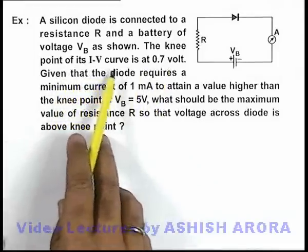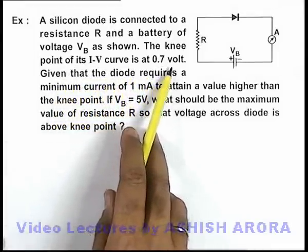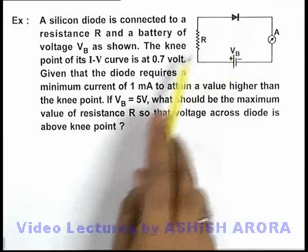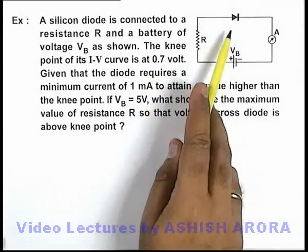Here the knee point of its I-V curve is at 0.7 volt. That means if the voltage across the diode is more than 0.7 volt, it becomes forward biased.